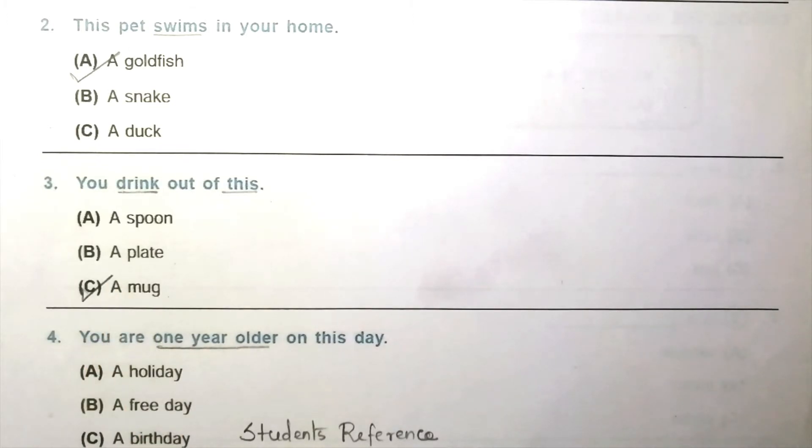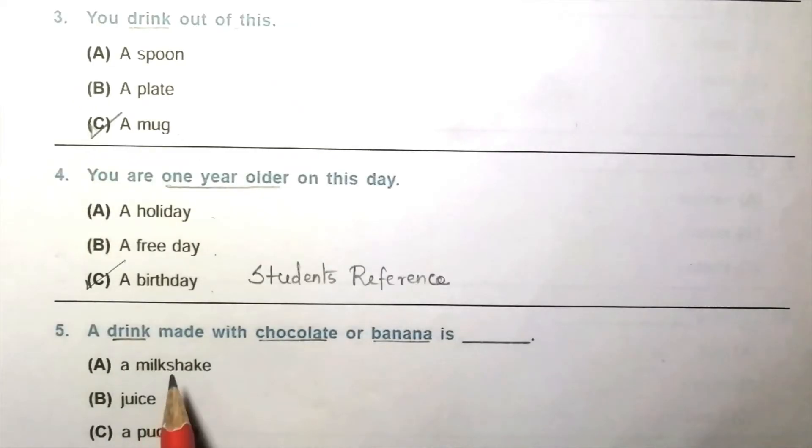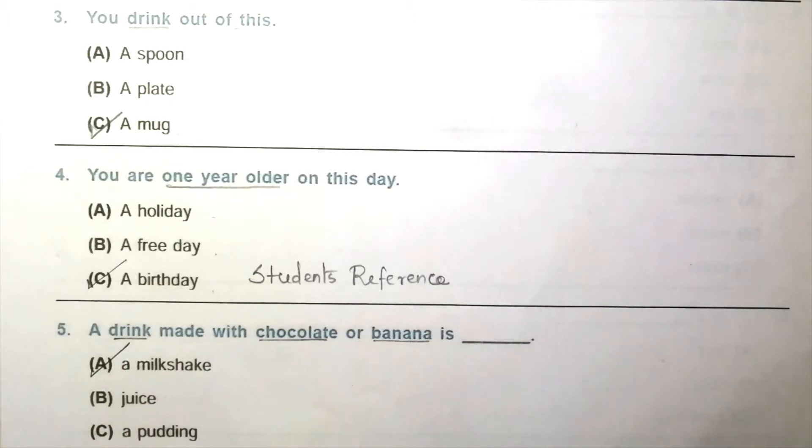Question 4: You are one year older on this day. A holiday, a free day, a birthday. The answer is C, a birthday. Question 5: A drink made with chocolate or banana is blank. A milkshake, juice, a pudding. The answer is A, a milkshake.